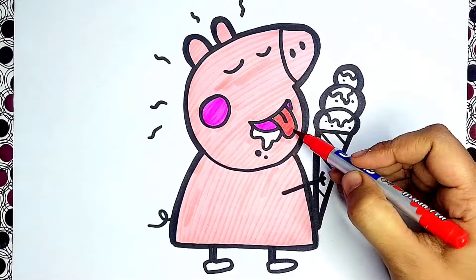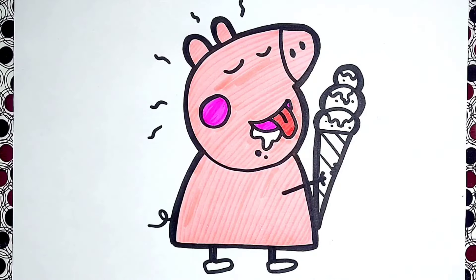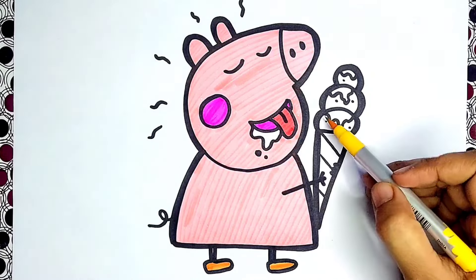Now I am using orange color for Peppa's shoes. For our ice cream, I am using yellow color.